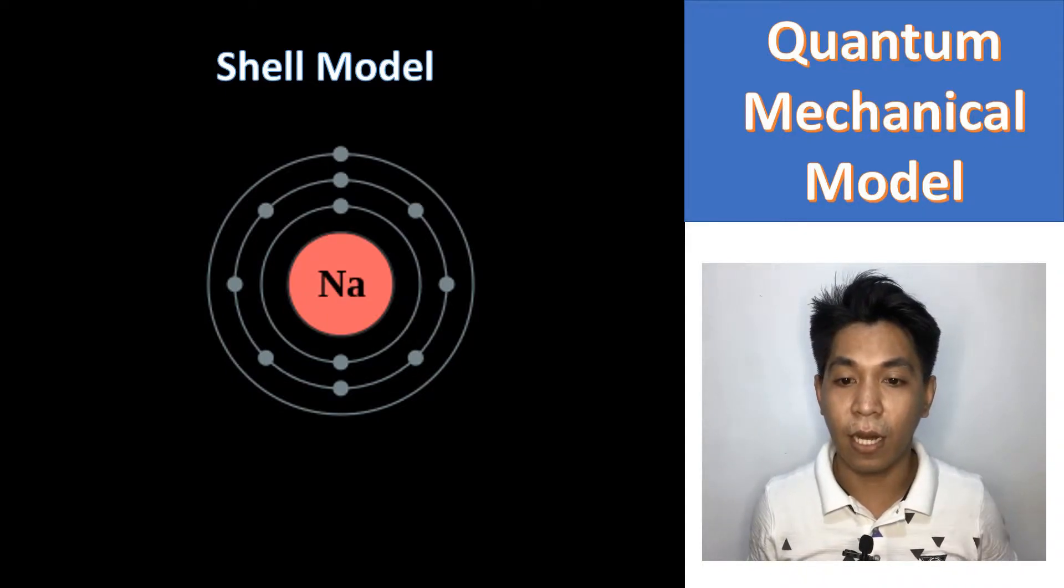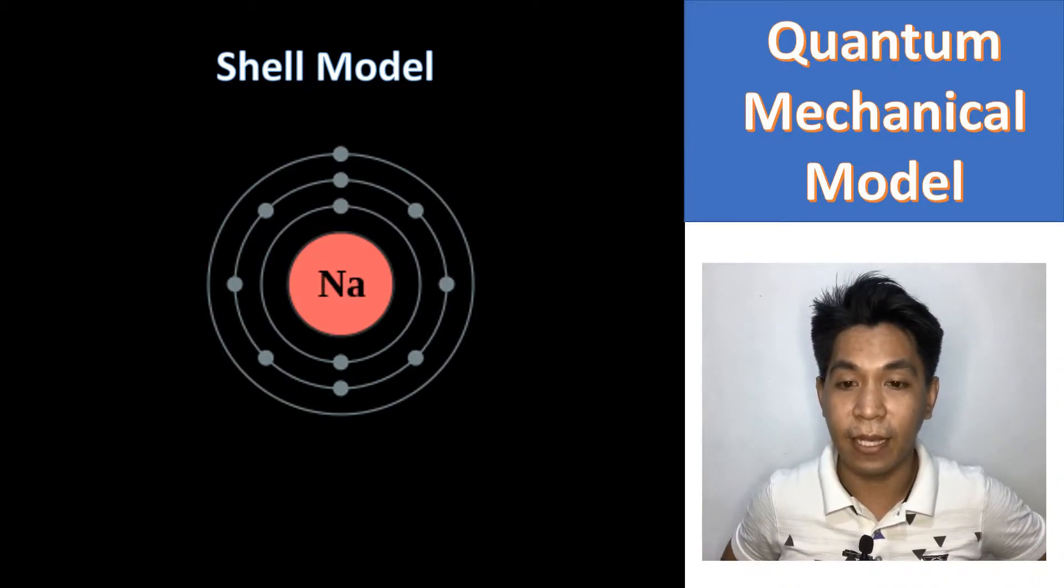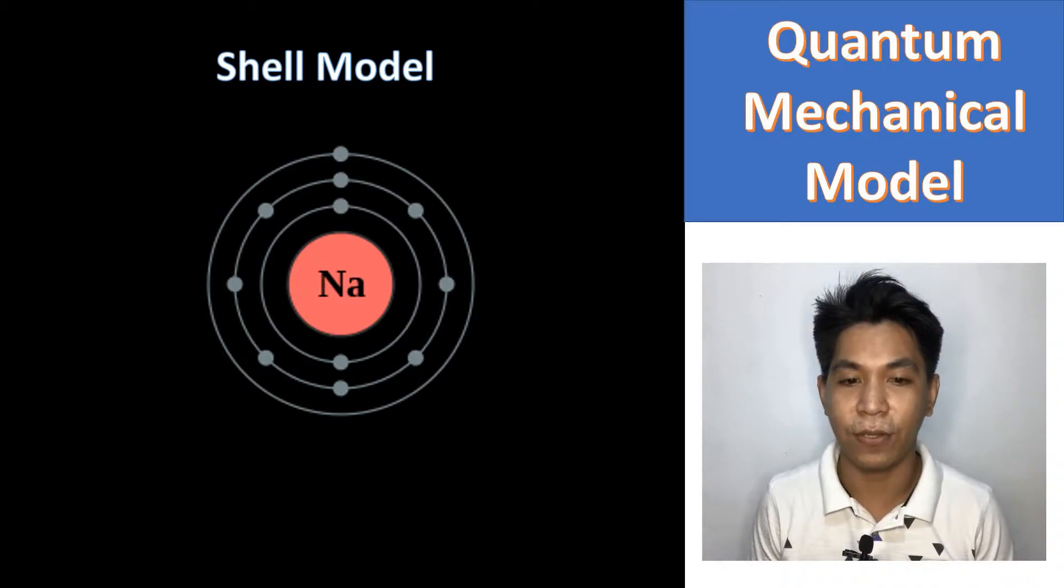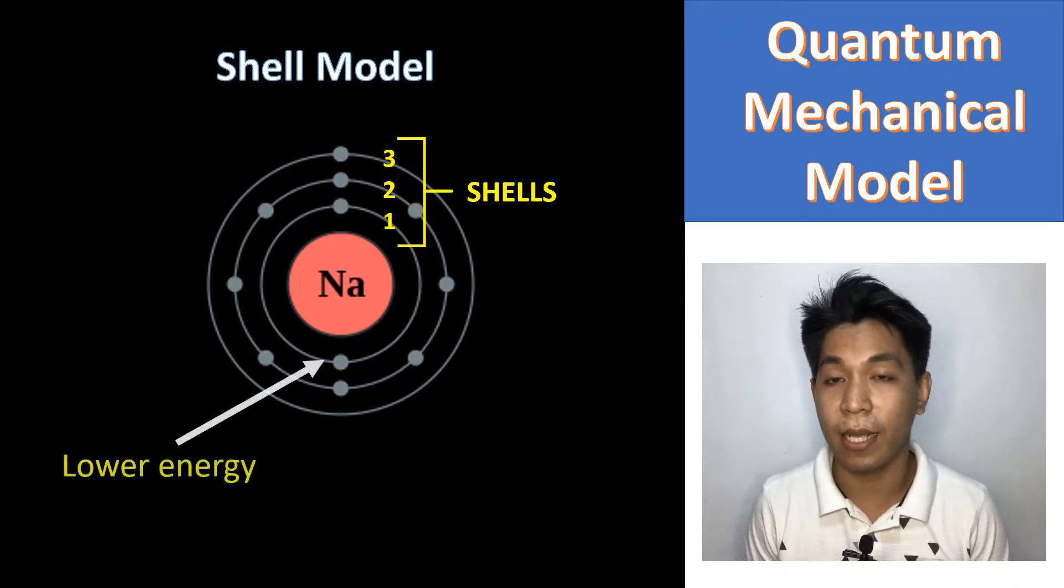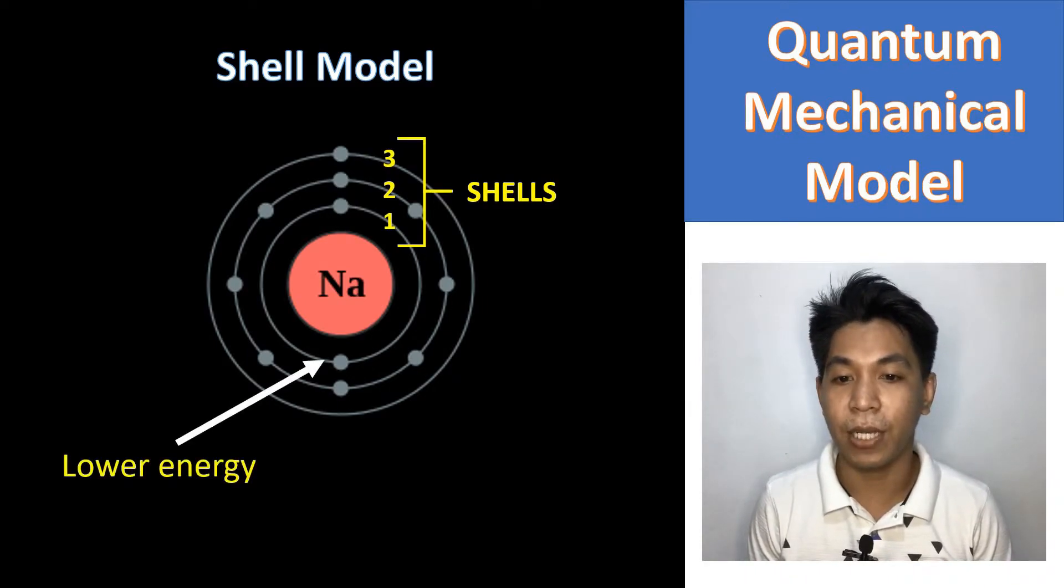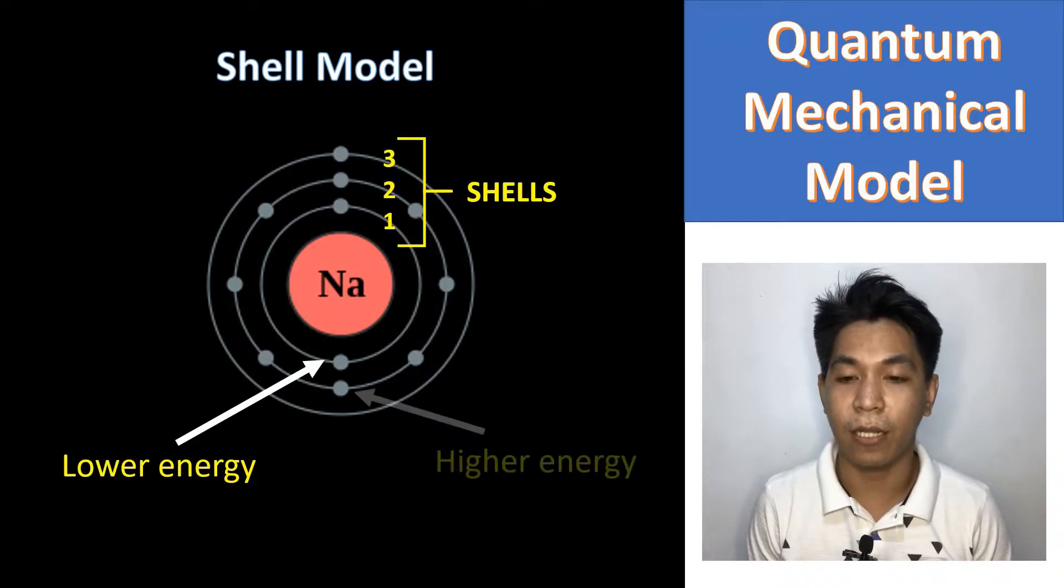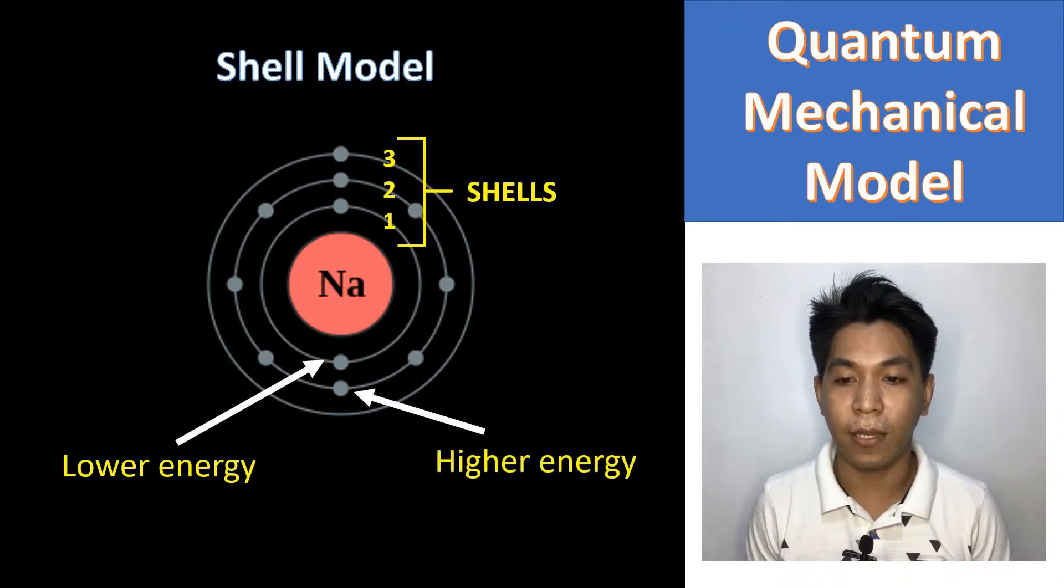These shells are useful in identifying the energy of electrons. An electron residing on the first shell has lower energy than the electron in the second shell. The idea is the farther an electron to the nucleus, the higher its energy.